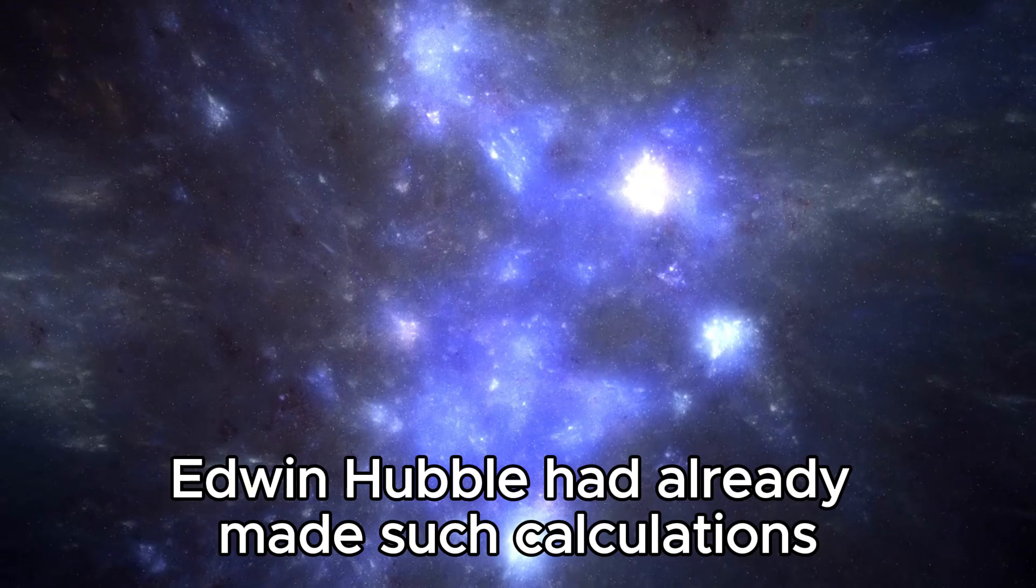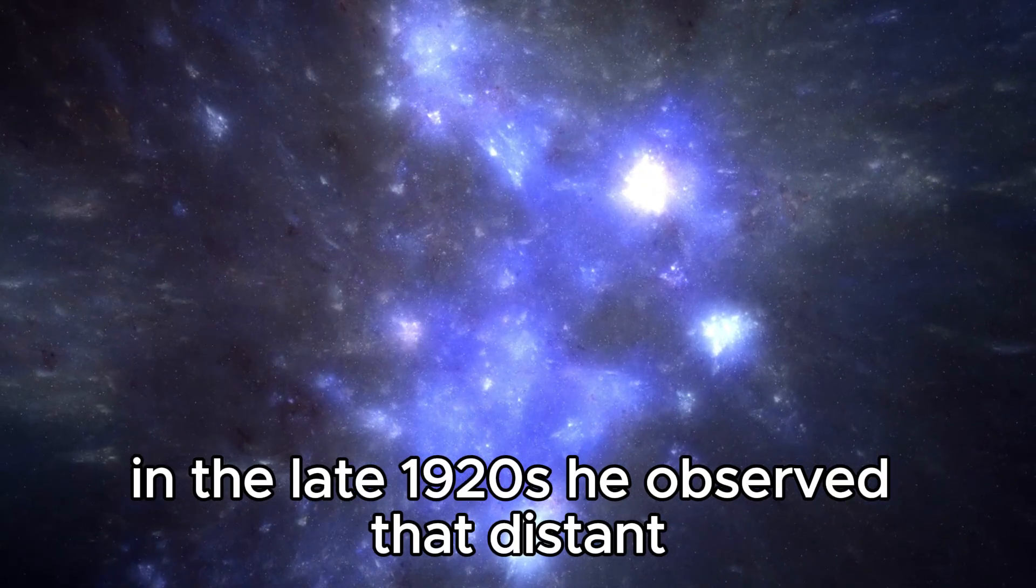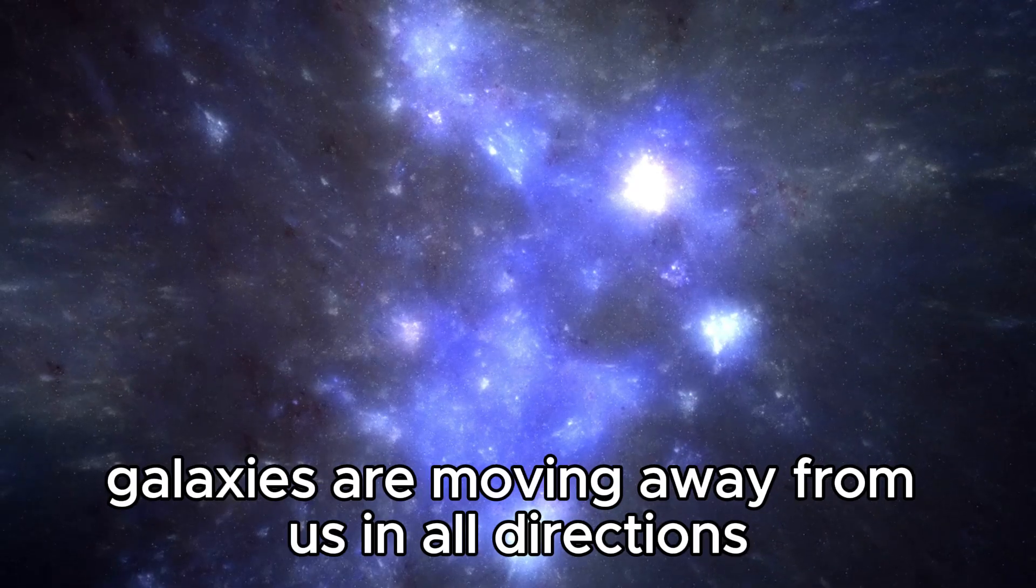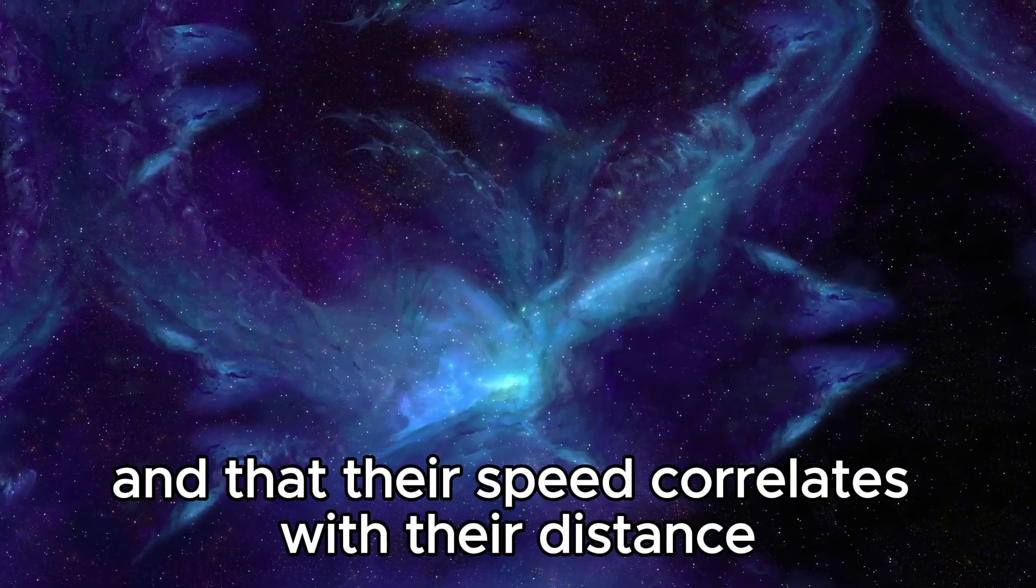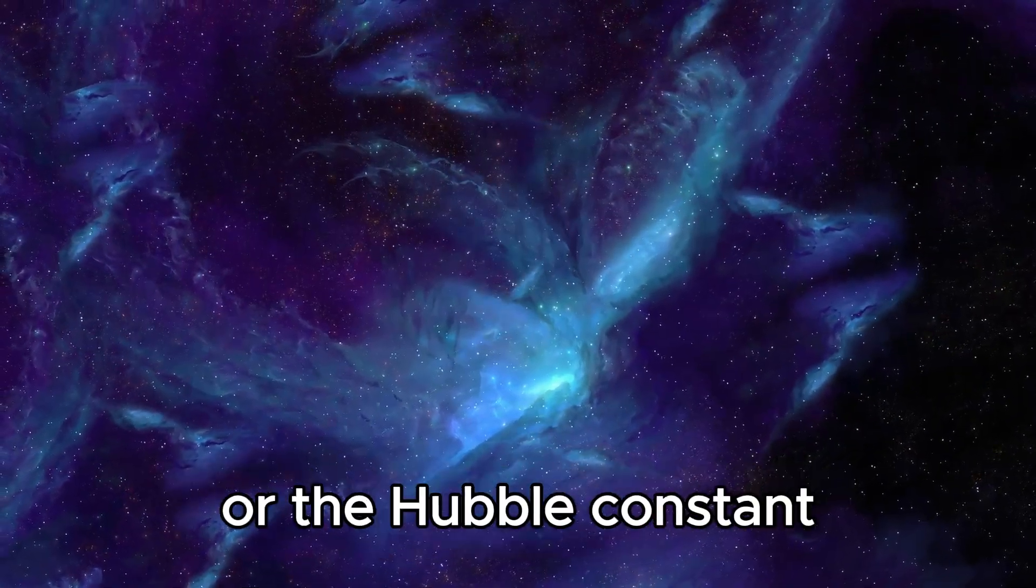Edwin Hubble had already made such calculations in the late 1920s. He observed that distant galaxies are moving away from us in all directions and that their speed correlates with their distance, which is now known as the Hubble Law or the Hubble Constant.